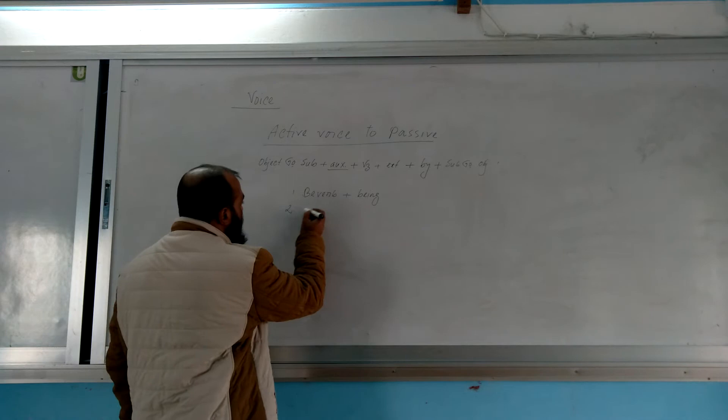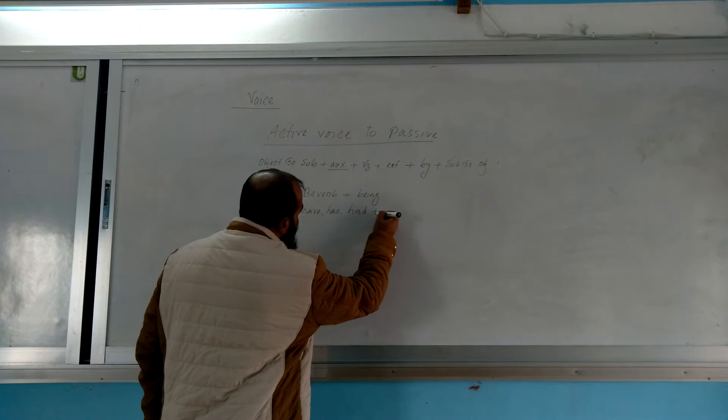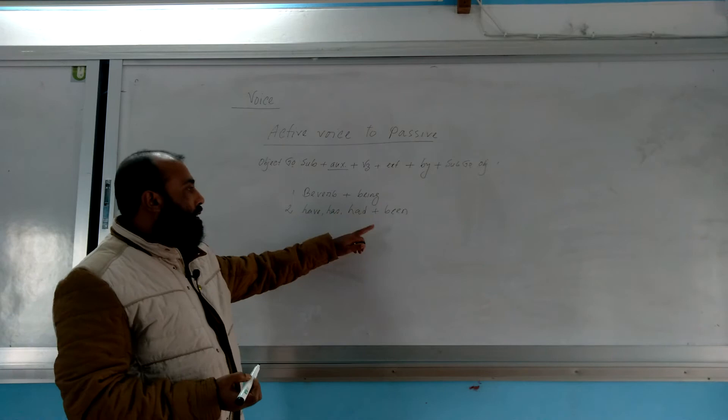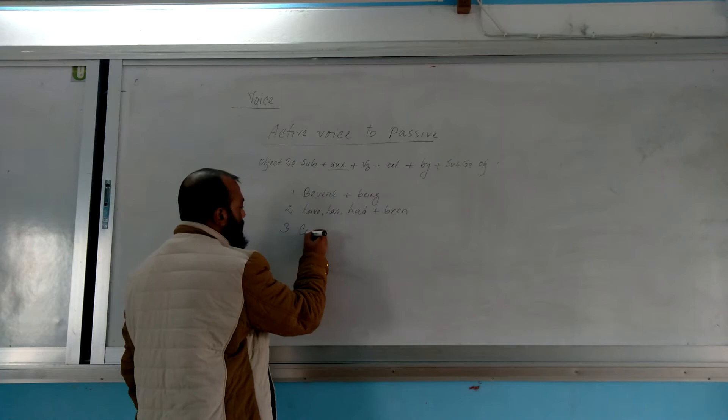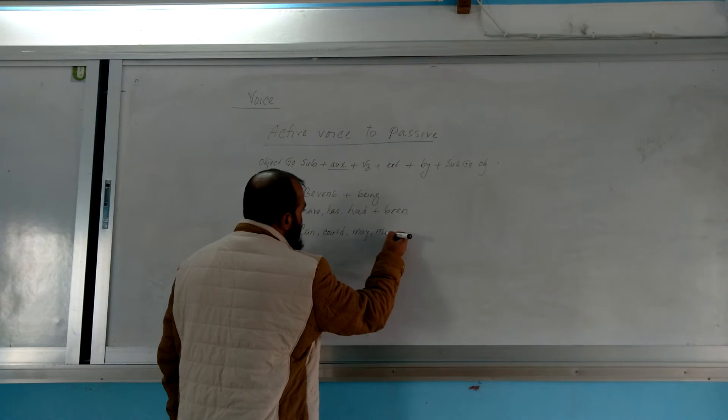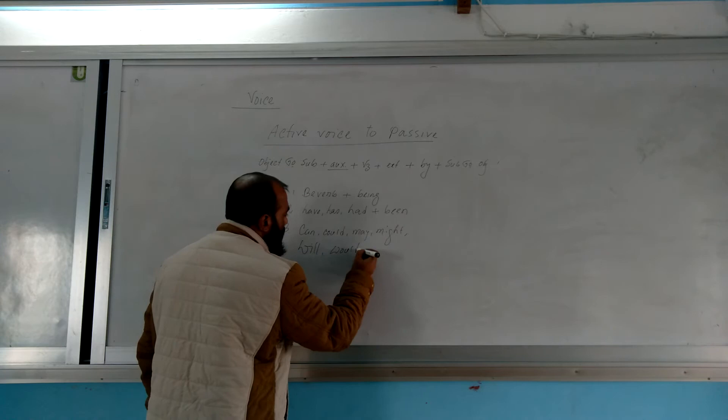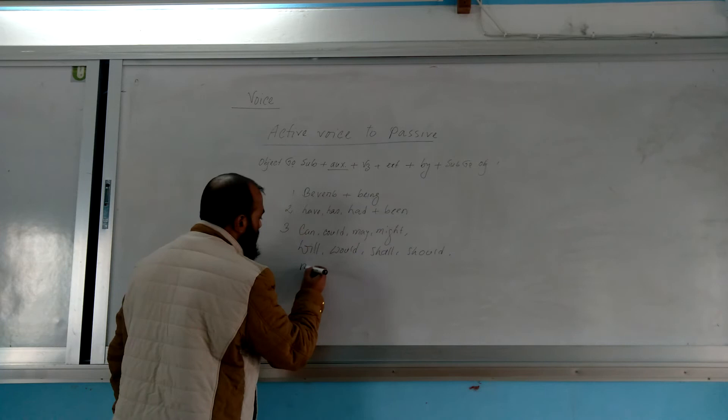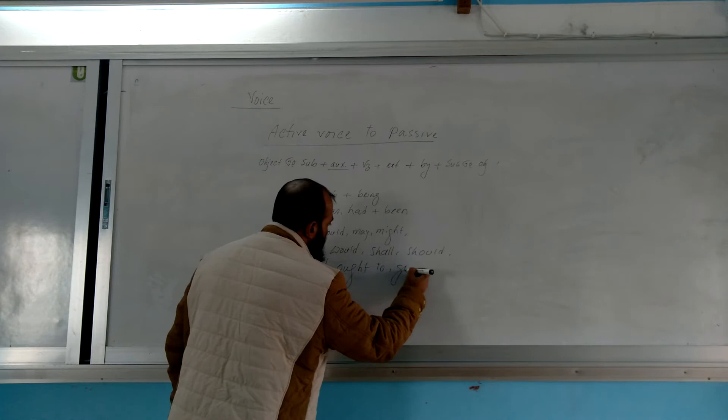If there is have verb - have, has, had - then we will add been. That is, have becomes have been, has becomes has been, had becomes had been. If there are modal auxiliaries like can, could, may, might, will, would, shall, should, must, ought to, going to...